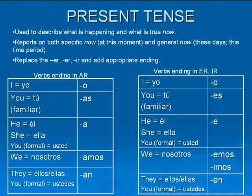Okay, the present tense. It's used to describe what is happening and what is true now. It reports on both the specific now and the general now. So what you do is you take off the AR, ER, and IR, and you add the appropriate ending. We're going to use hablar — to speak — as an example.